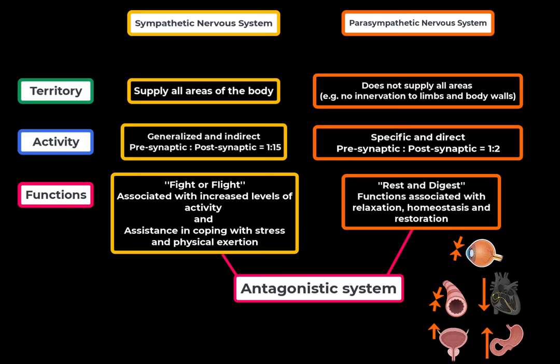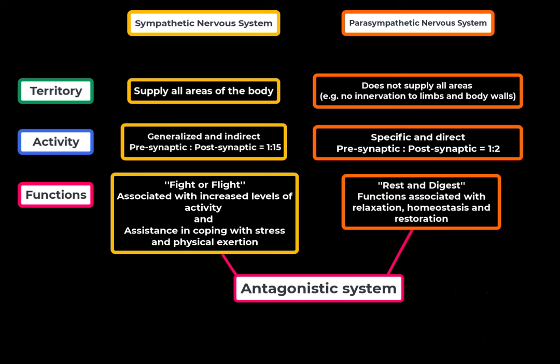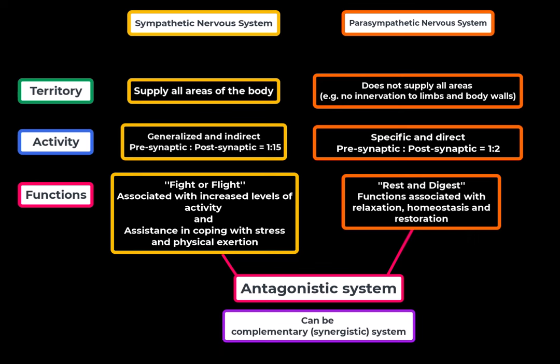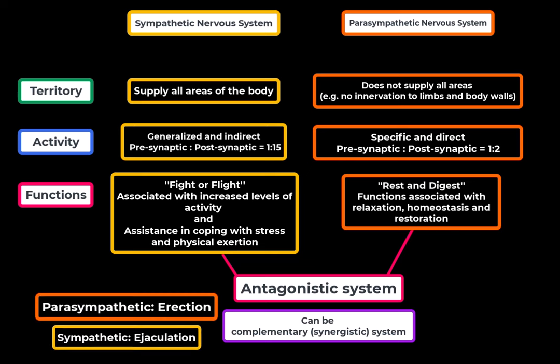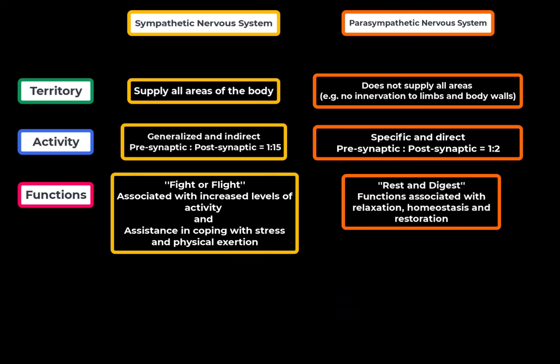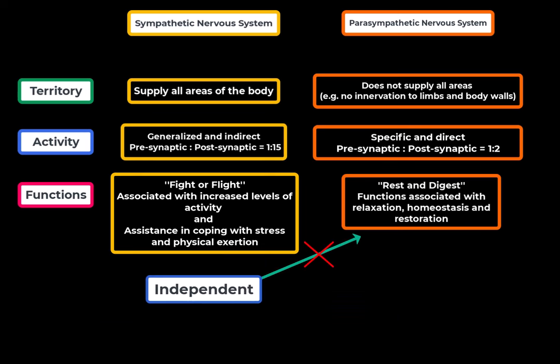However, they are not always antagonistic — this is a very important point. The two divisions may also be complementary or work as synergistic systems. For example, in normal sexual function in males, parasympathetic activity produces erection and sympathetic activity results in ejaculation — so here these two systems complement each other. Also, one division may function independently of the other; for example, sympathetic stimulation activates sweat gland secretion, but parasympathetic activity plays absolutely no role in sweat gland activity.